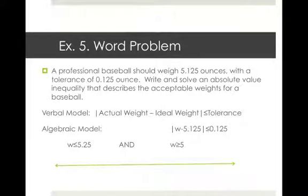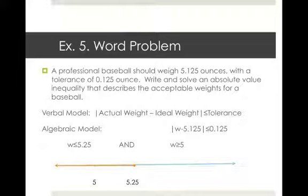Let's put this on a number line. W greater than or equal to 5 and W less than or equal to 5.25 — we want where they both are true, so just where they overlap. That region starts at 5 (including that endpoint) and ends at 5.25 (including that endpoint). Our final answer is 5 less than or equal to W less than or equal to 5.25.